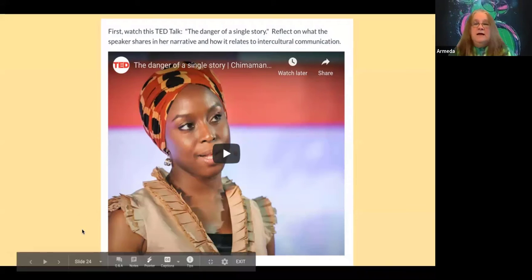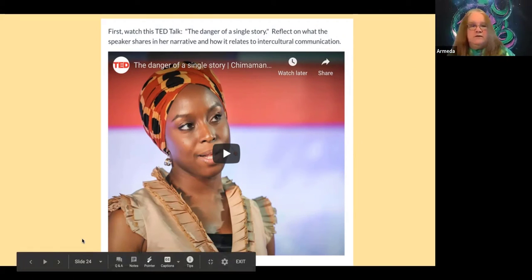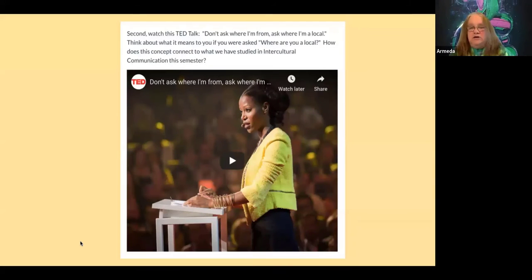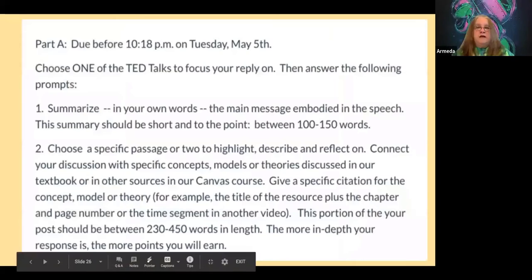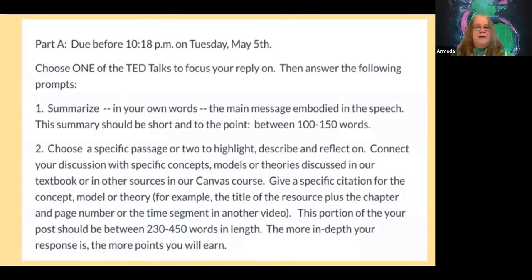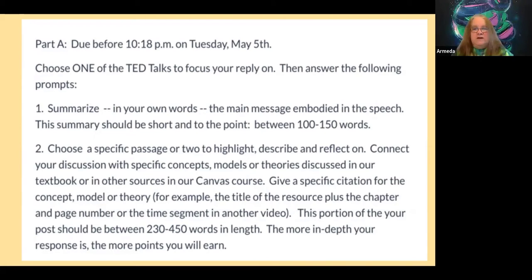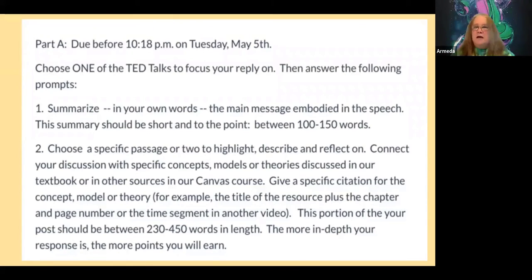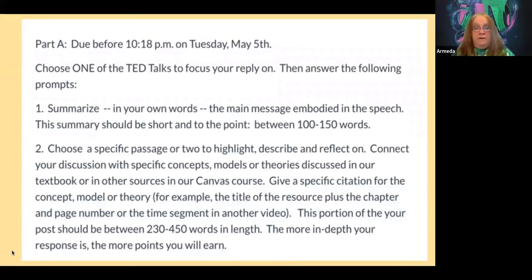For this assignment, the students needed to watch a TED Talk called 'The Danger of a Single Story.' They also had to watch a second TED Talk. After watching both, they had a choice: choose one of the TED Talks to focus their responses on. They had to summarize in their own words what the TED Talk was about, then choose a specific passage or two to highlight, describe, and reflect on, and give a specific citation. The more in-depth, the more points they'd earn. Notice that's not a lot of direction — but these students have already figured out what I'm looking for.